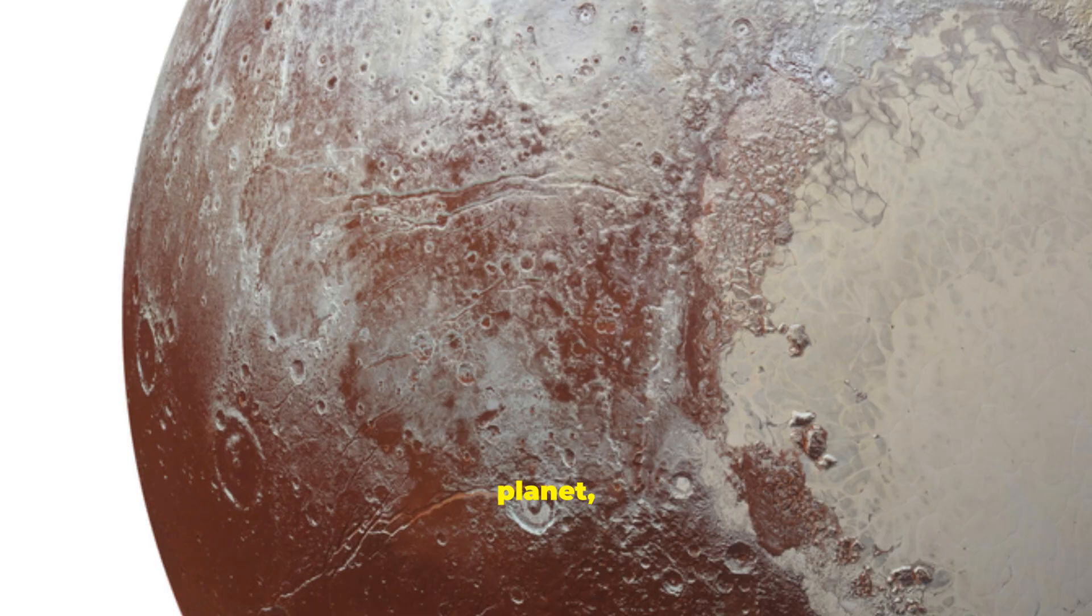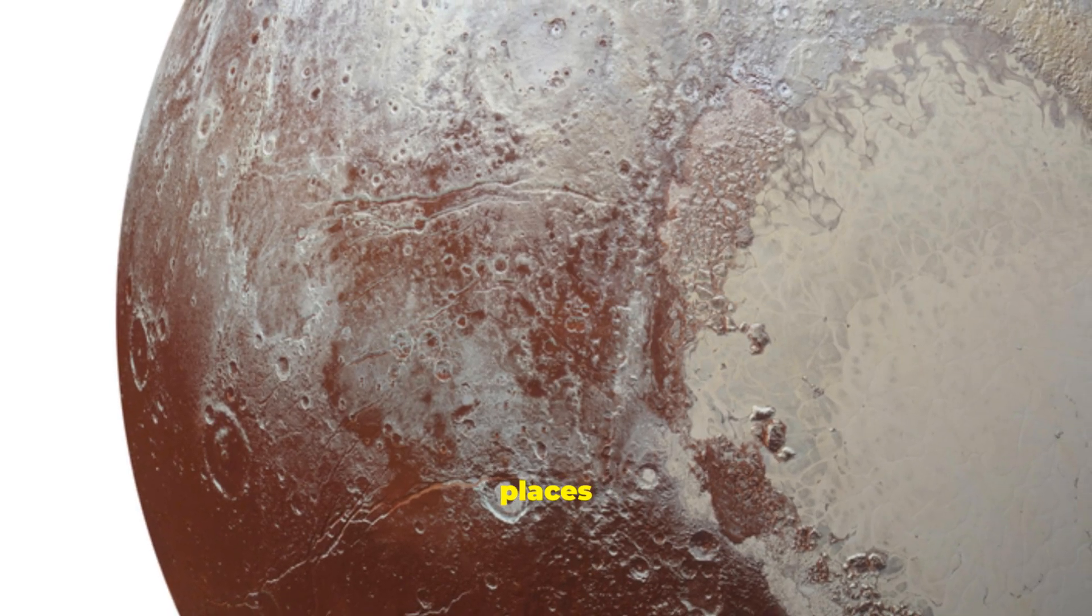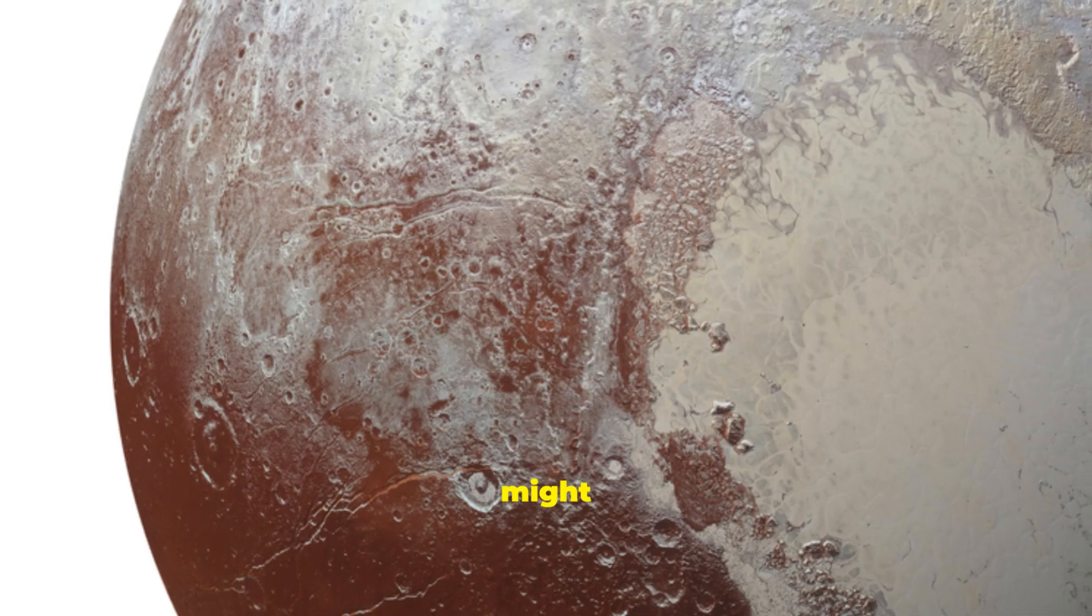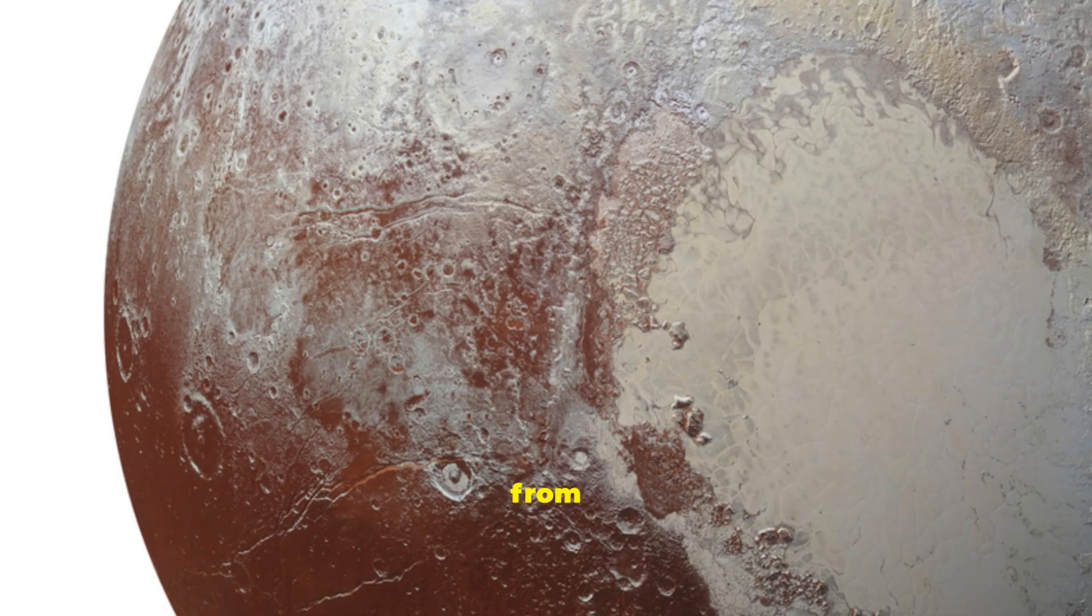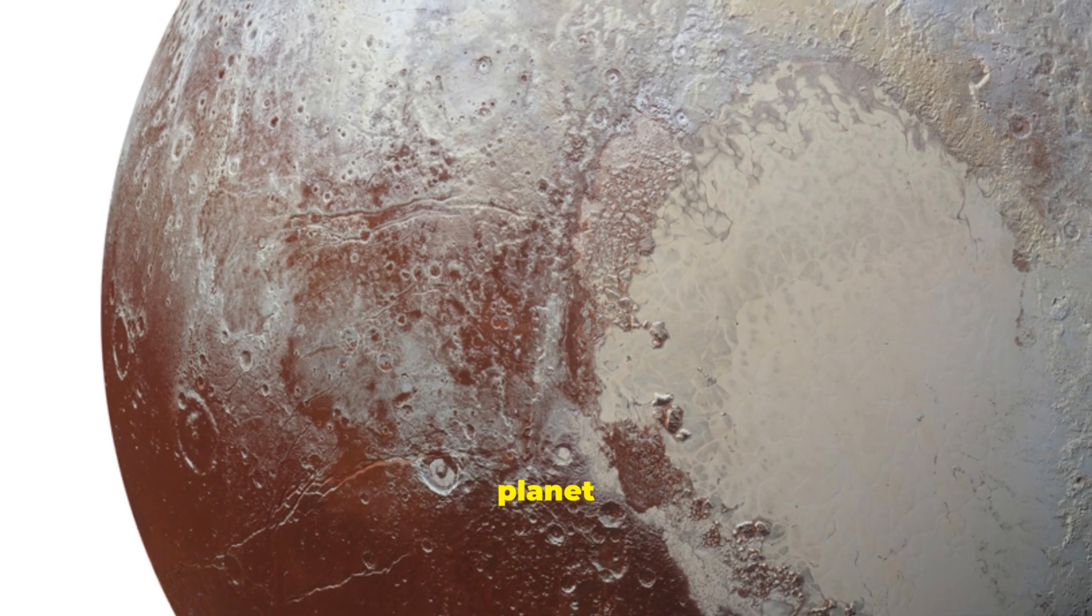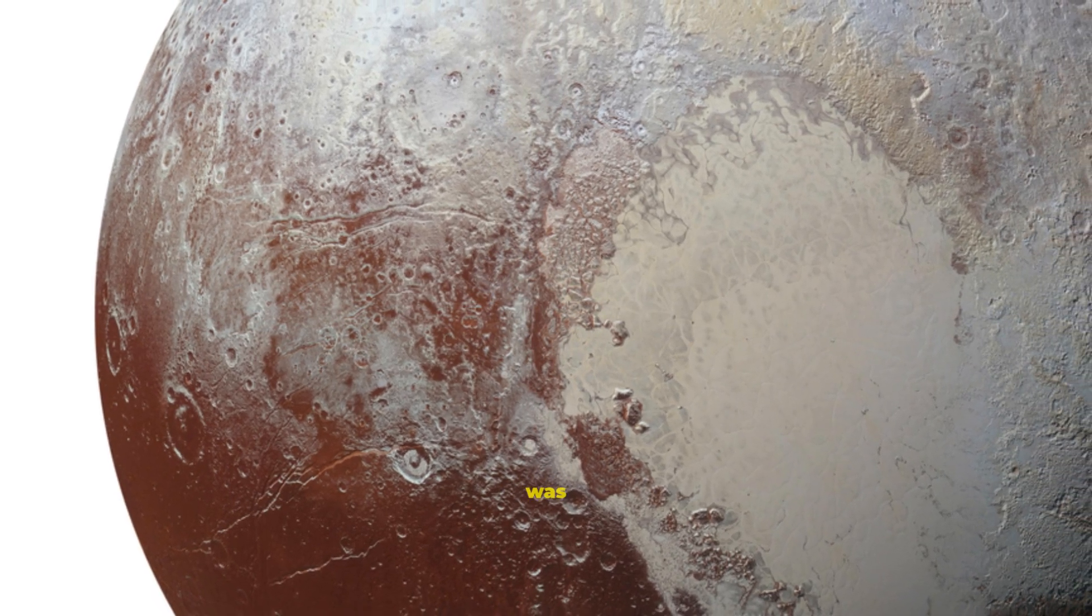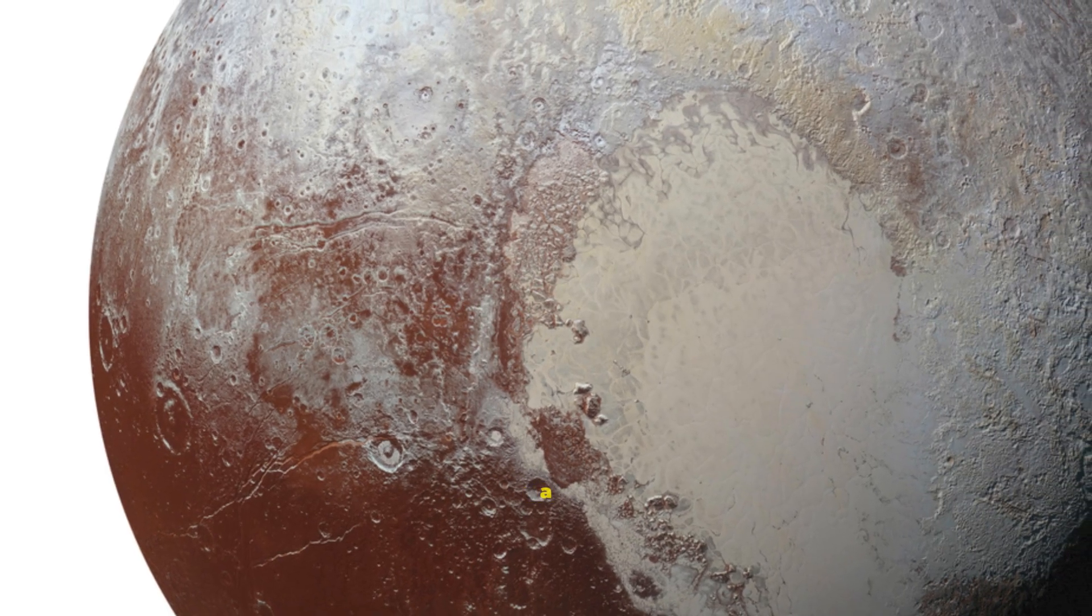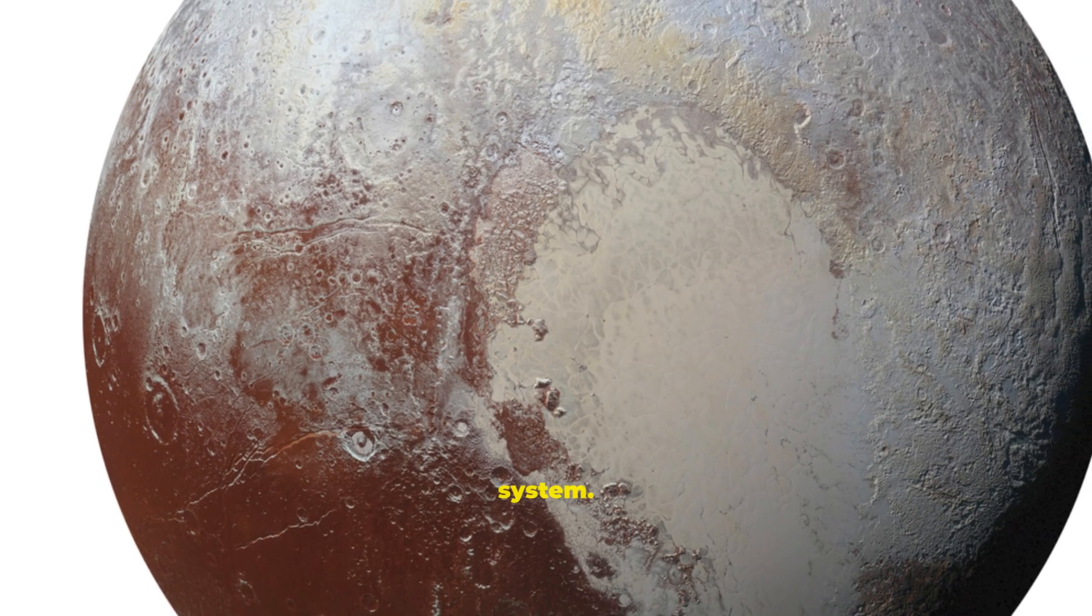This thing might not be a planet, but it is one of the most vibrant and mysterious places in our solar system. Now, you might be asking, why did Pluto get demoted from its status as ninth planet in the first place? As much as I want to say that it was a big conspiracy, it really has more to do with a constant change in how we identify objects in the solar system.